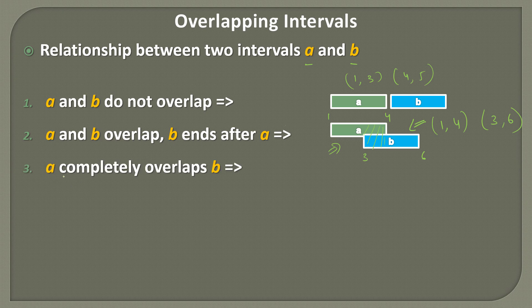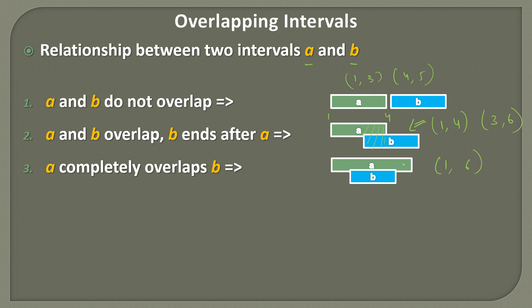The third case is A completely overlaps B. Here, A is actually overlapping B completely. For example, A could be 1,6 and B could be 2,4. So A spans from 1 to 6 and B spans from 2 to 4 — A completely contains B. This is one such case where A completely overlaps B.